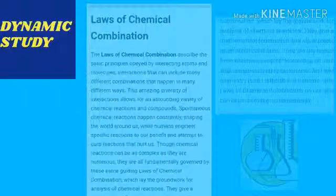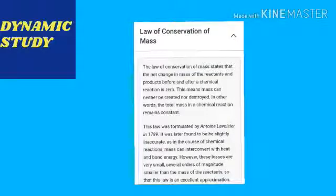Let's go for the first law: the law of conservation of mass. This law states that the mass of the reactants is always equal to the mass of the products — that is, mass is neither created nor destroyed in a chemical reaction. For example, if we take two atoms of hydrogen and one atom of oxygen, their mass will always equal the mass of one molecule of water, H₂O. Whenever there is a chemical reaction, the mass of the reactants will always equal the mass of the products.